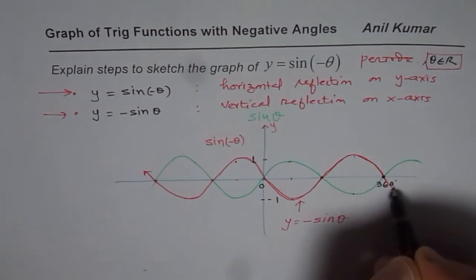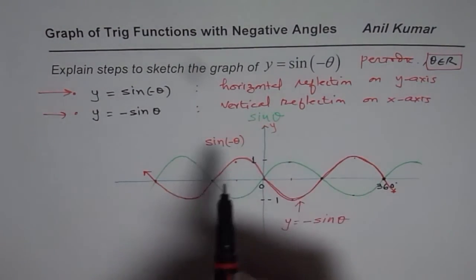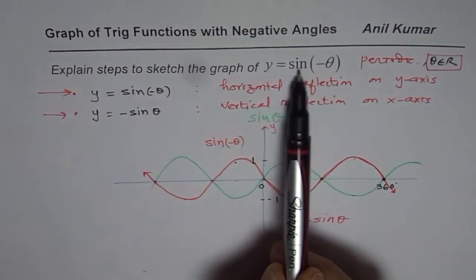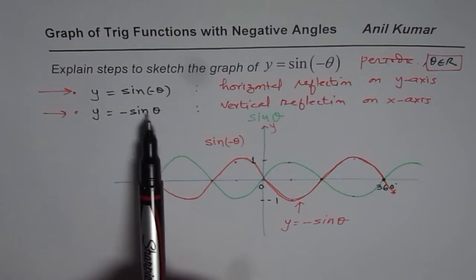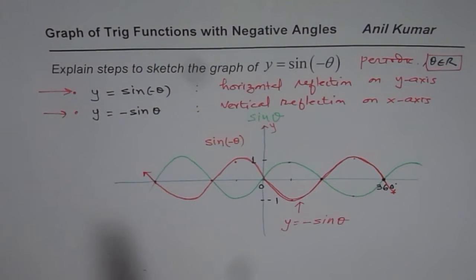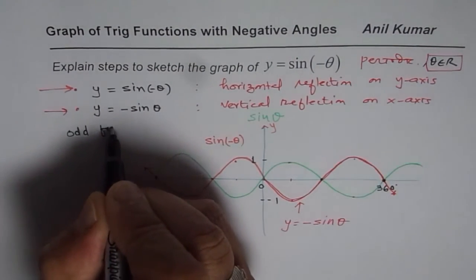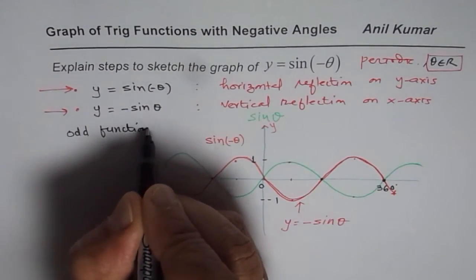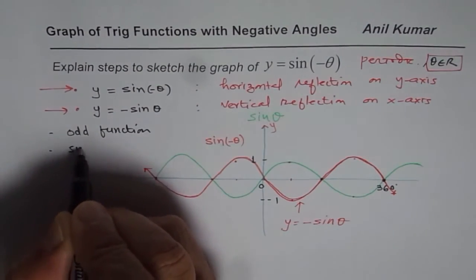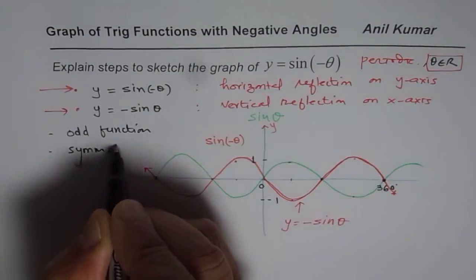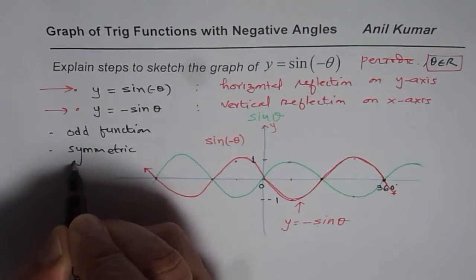So here again, you get the same function. Or, you could write this equation as minus of sine theta and sketch it. As you know, this function is odd function. It is odd function and it is symmetric about origin.